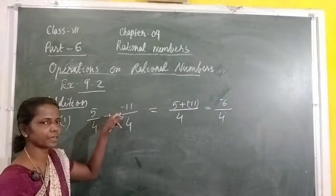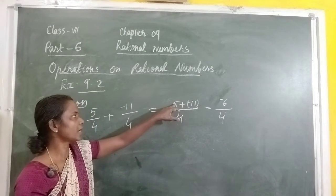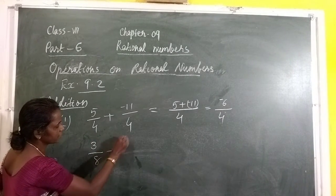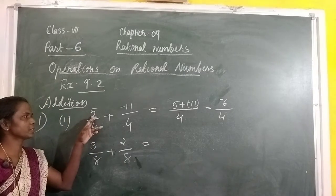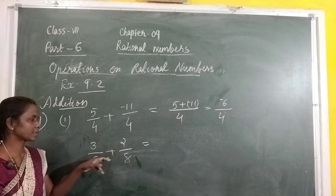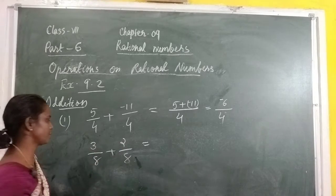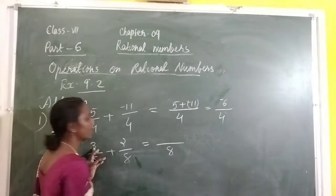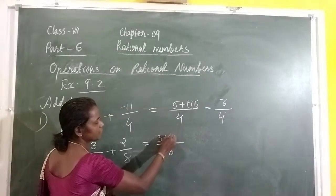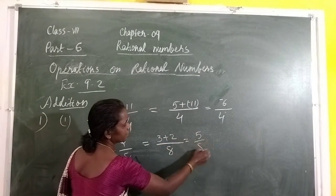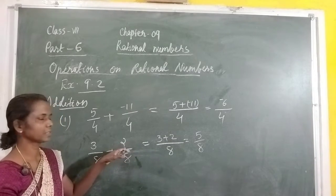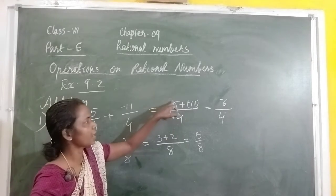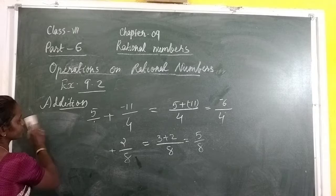Is it clear? Denominators are same, so we write that same denominator and add the numerator. Now look here: 3/8 plus 2/8. These two rational numbers are both positive, and the denominator is also the same. So write the same denominator and add the numerator: 3 plus 2 equals 5/8. Answer is 5/8.